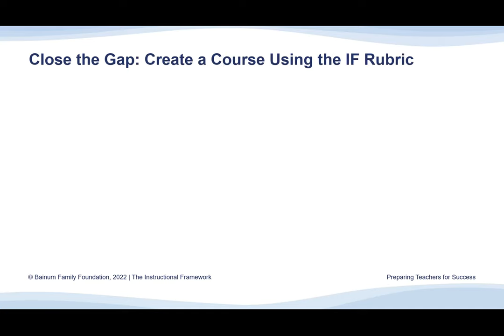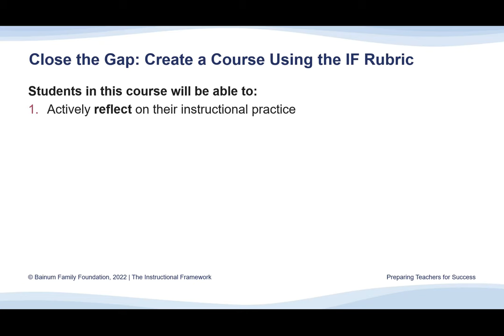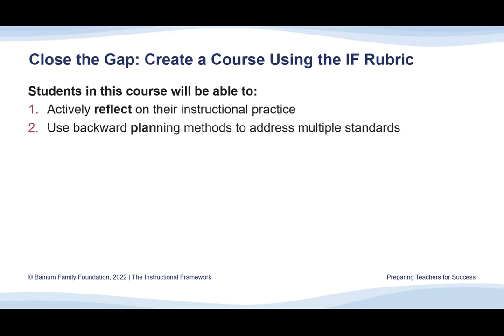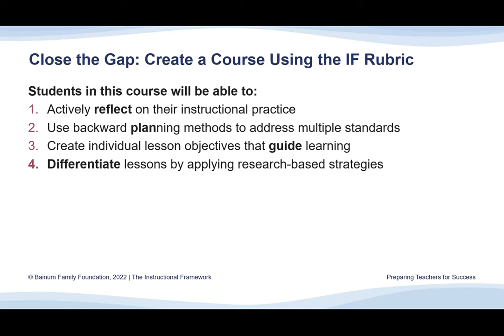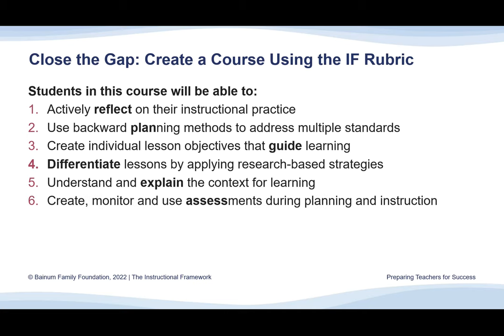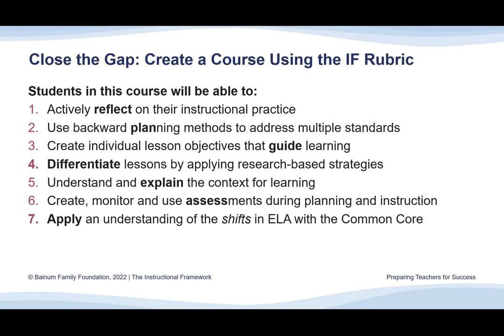The eight best practice indicators seamlessly become the course objectives. By the end of the course, students will be able to actively reflect, use backward planning, create individual lesson objectives, differentiate lessons, understand and explain the context for learning, create, monitor and use assessments, apply an understanding of the shifts in ELA with the Common Core, and promote students' real-world connection and application.